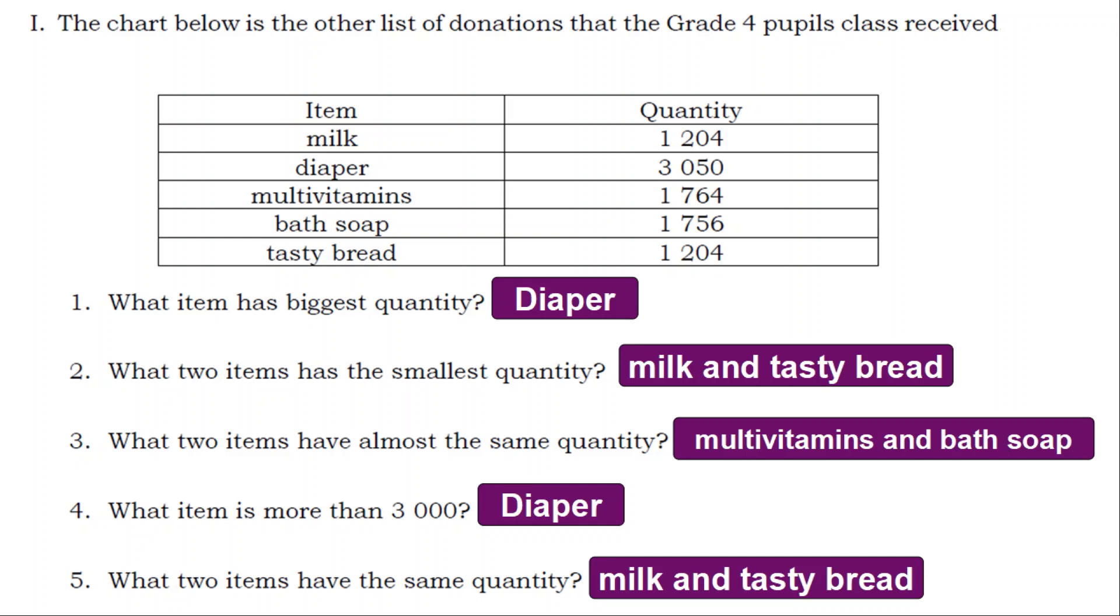3. What two items have almost the same quantity? Multivitamins and Bath Soap.